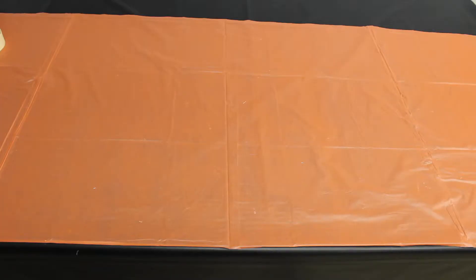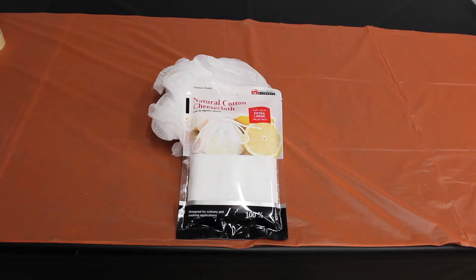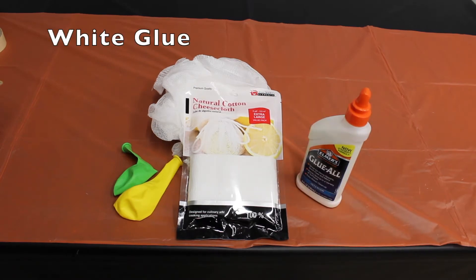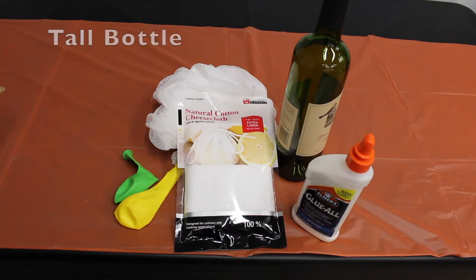These are some of the things you need for our airy, scary spook: cheesecloth (you can get this at the grocery store), some balloons, some white glue like Elmer's, and a tall bottle.